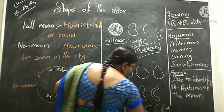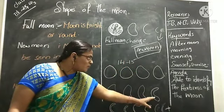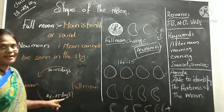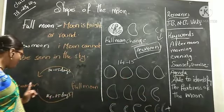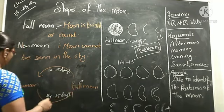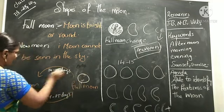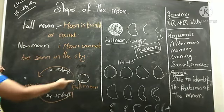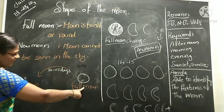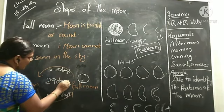On the 15th day you cannot see the moon. From full moon to no moon, and from no moon to full moon, each takes about 14 to 15 days. So from new moon to full moon is 15 days, and full moon back to new moon is another 15 days — total 29 days.